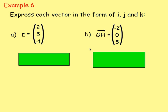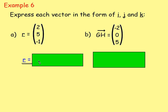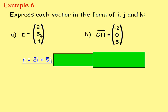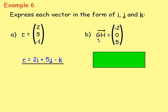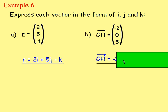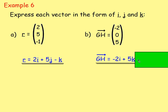Going back the other way — express each vector in the form of i, j, and k. If vector r has components (2, 5, -1), you write it as 2i plus 5j minus k. Two units in x gives 2i, five in y gives 5j, and negative one in z gives minus one k, or just minus k. For vector gh with components (-2, 0, 5): that would be negative 2i — zero j so you don't need to write that — plus 5k.